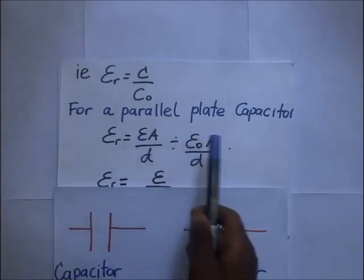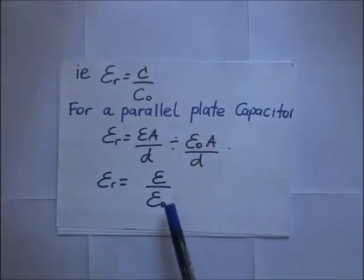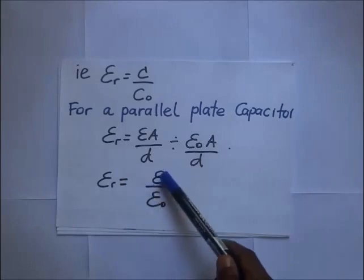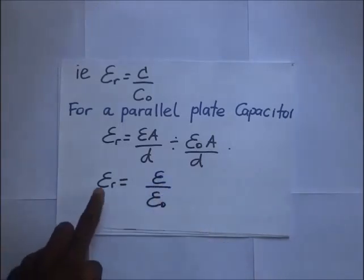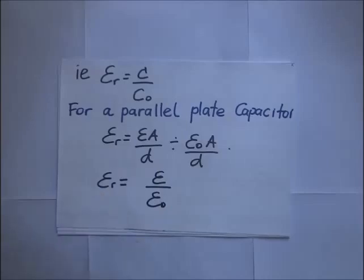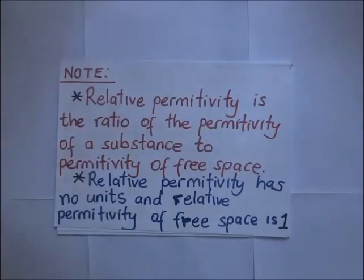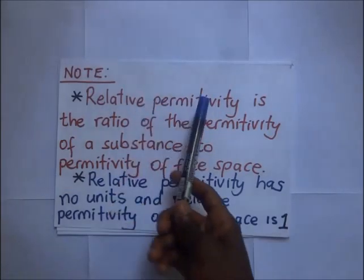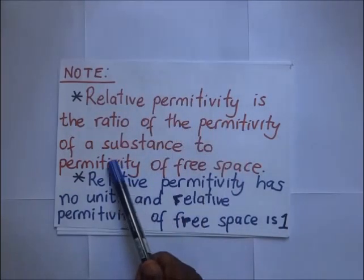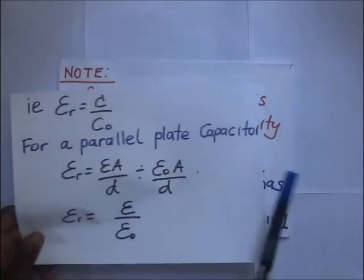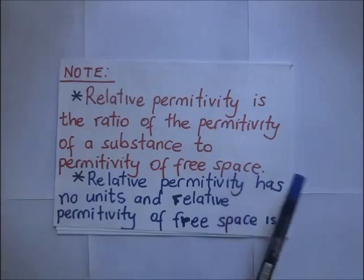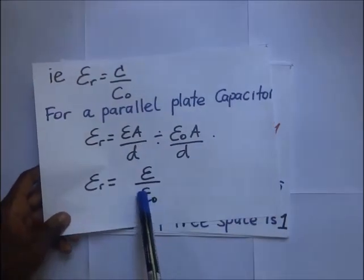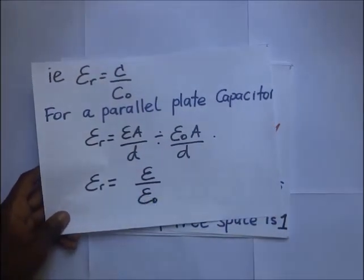When we divide those two expressions, the area and distance cancel out, and we end up with the ratio of the permittivity of the dielectric to the permittivity of free space. This means the relative permittivity is simply the permittivity of a substance divided by ε₀, the permittivity of free space.